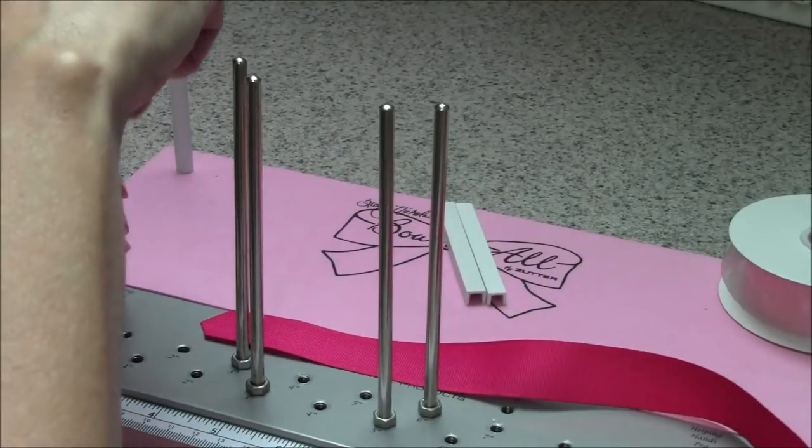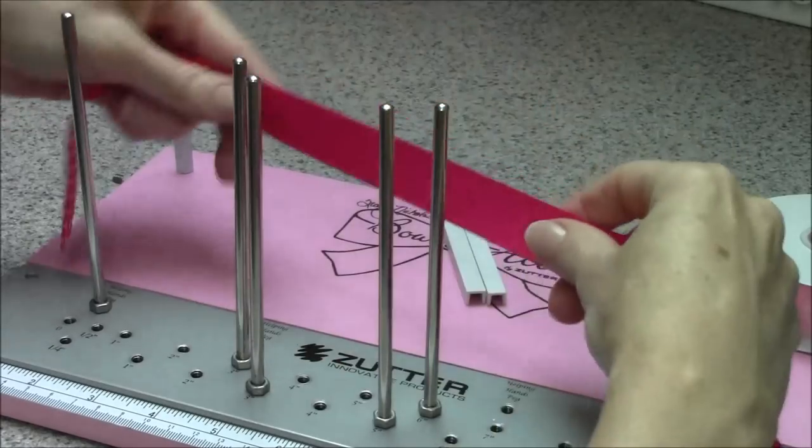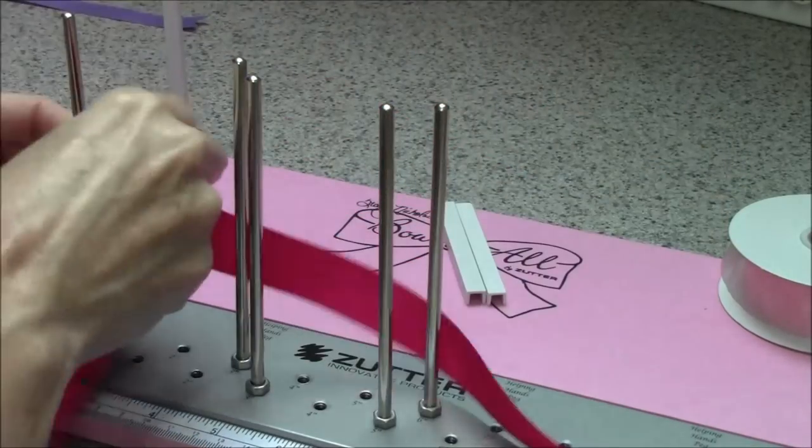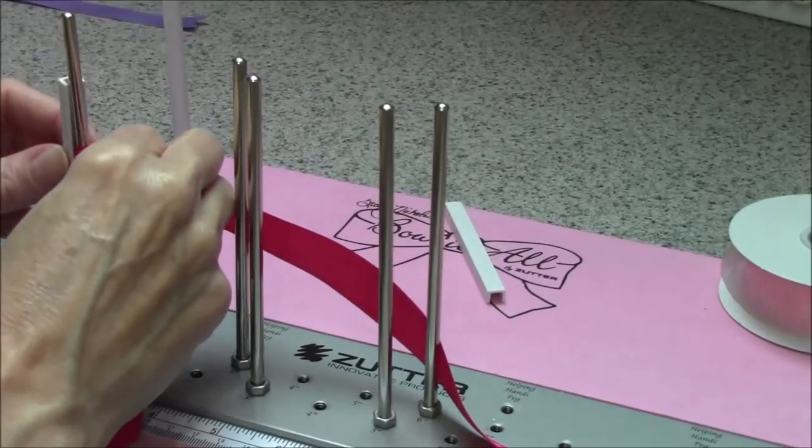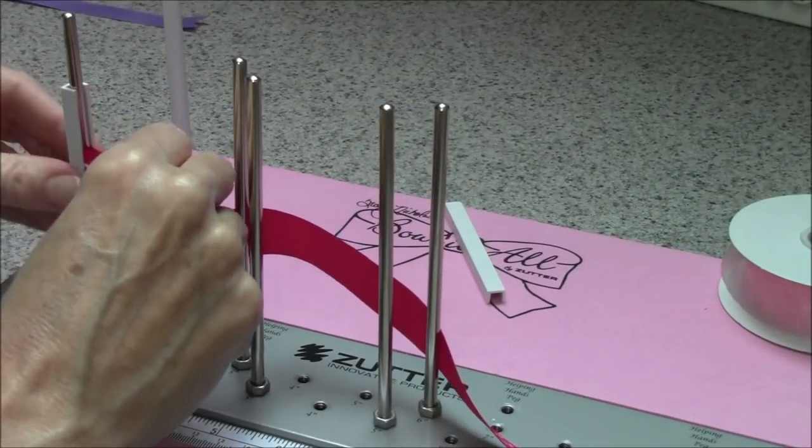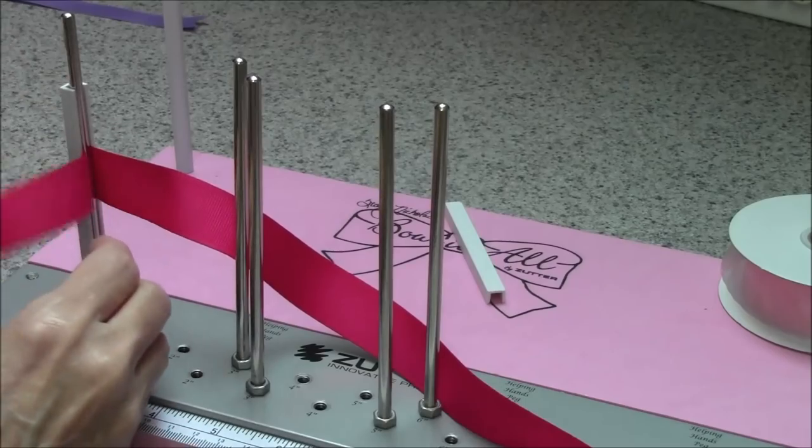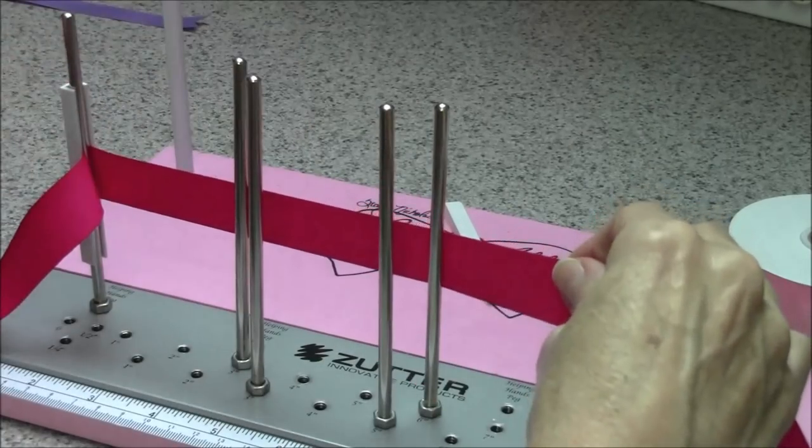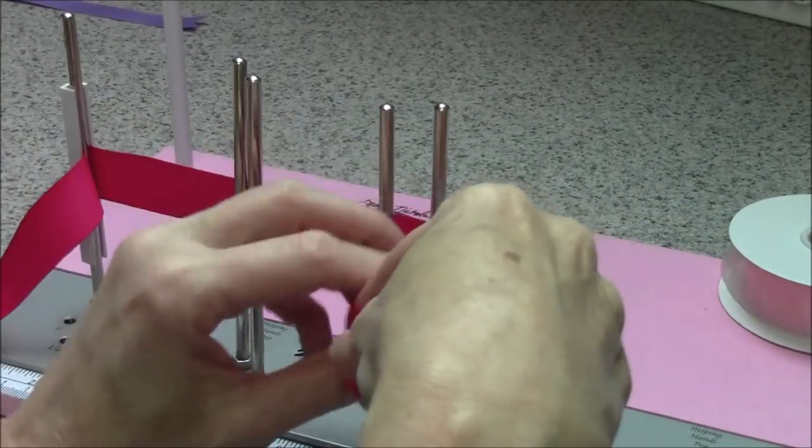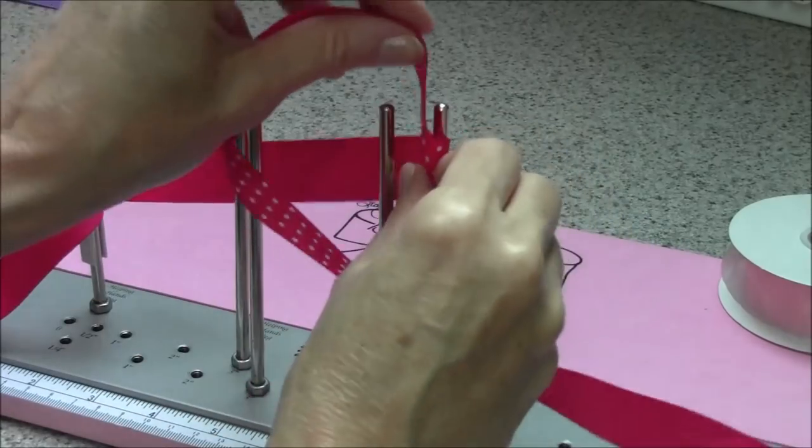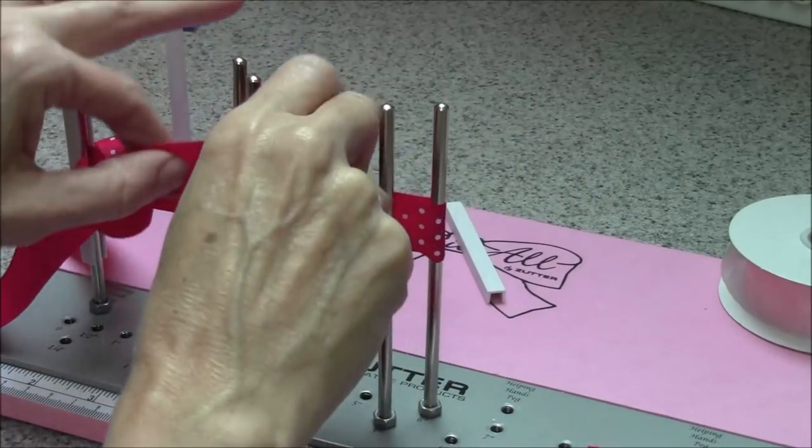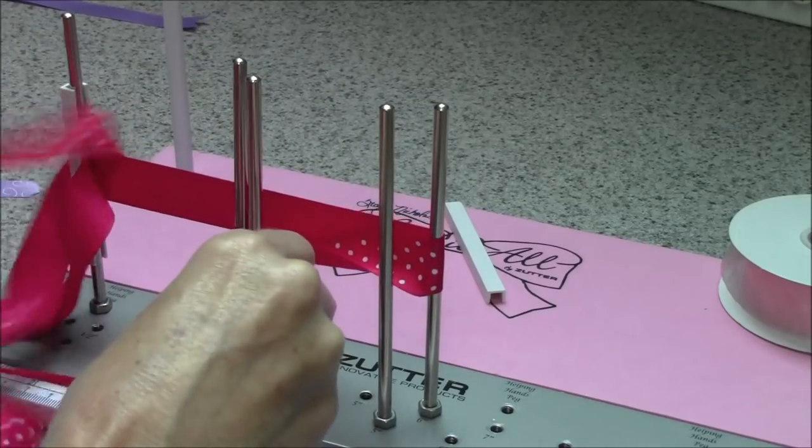One trick that you can use if you're having a little trouble with the twisting when you first get started is use your little helping hands peg. Let that hold the ribbon that you usually would hold with your left hand, that way you can have two hands to help you make your twists as you're going through the middle.